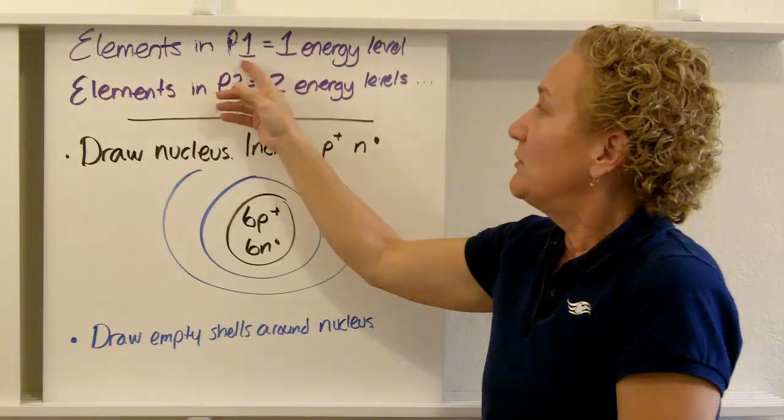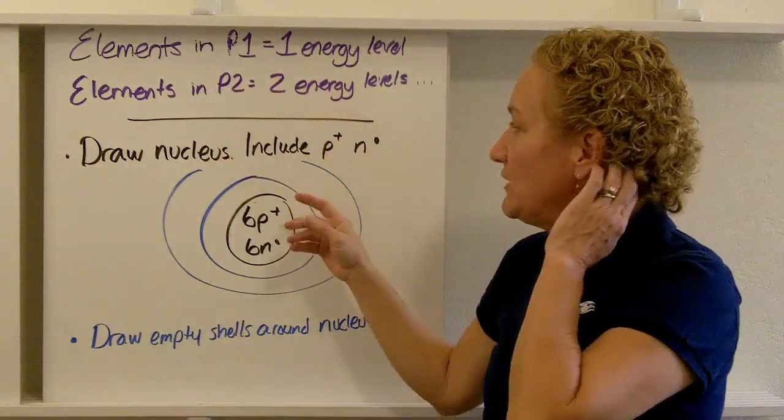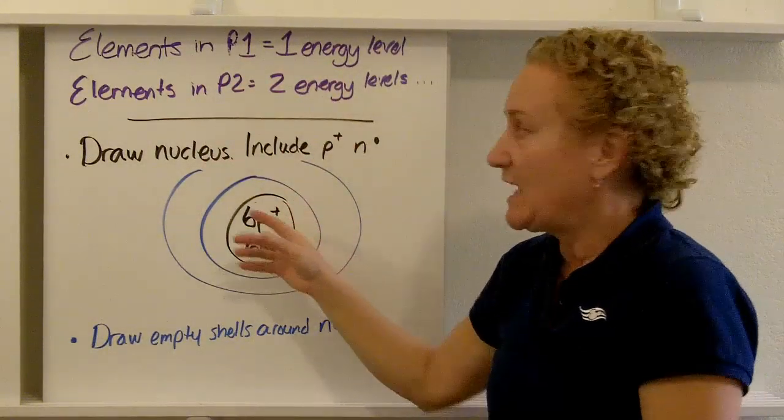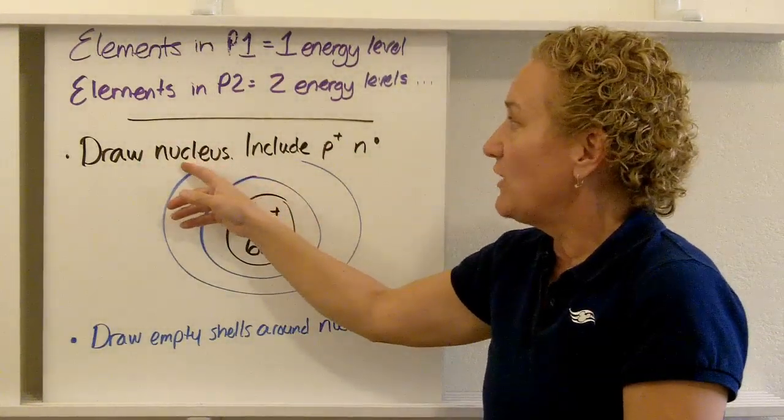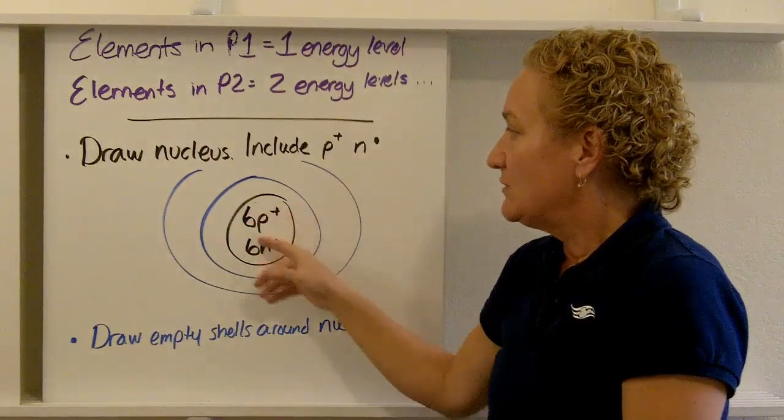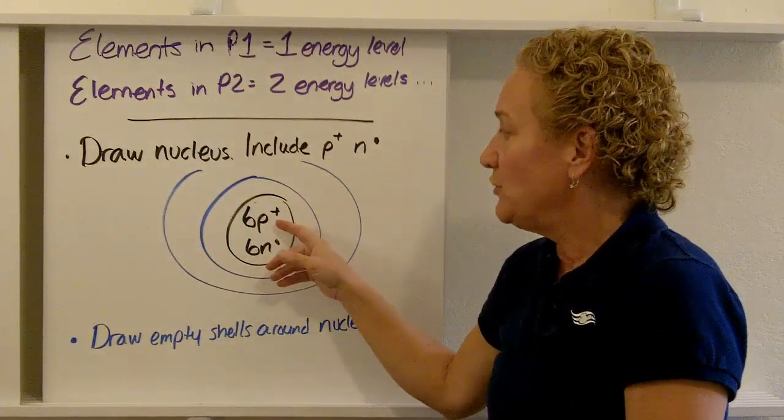Again, elements in period one have one energy level. Period two have two energy levels. So what I did was I did carbon as an example. And the first thing you're going to do once you have all of your data is you're going to draw the nucleus, including the number of protons and neutrons. So the black here is my nucleus.